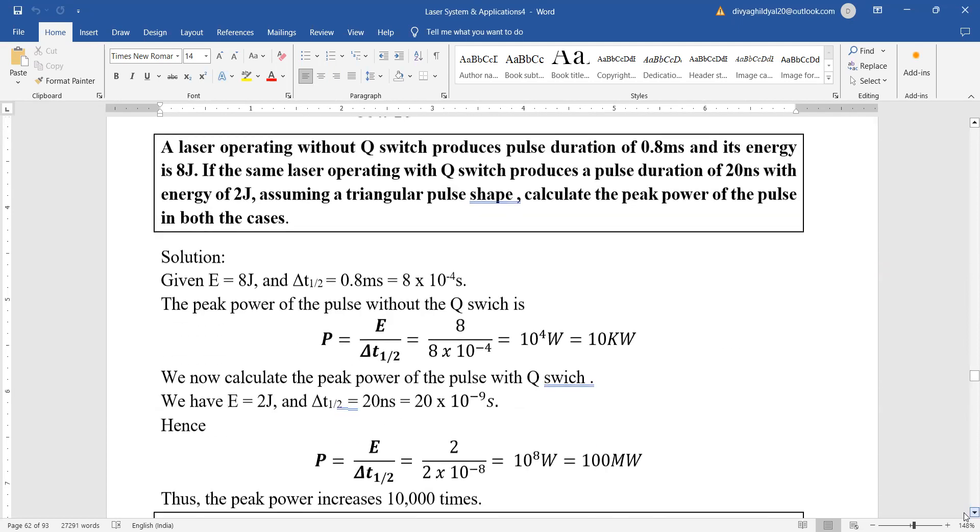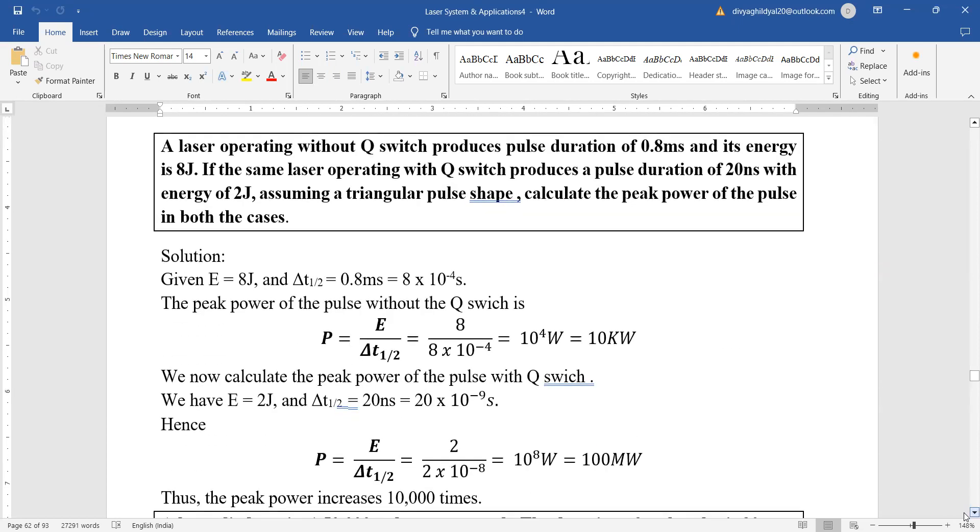A laser operating with Q switch produces pulse duration of 0.8 milliseconds and its energy is 8 joule. If the same laser operating with Q switch produces a pulse duration of 20 nanoseconds with energy of 2 joule, assuming a triangular pulse shape, calculate the peak power of the pulse.